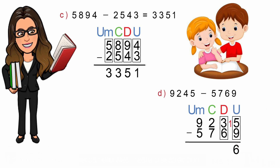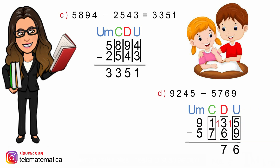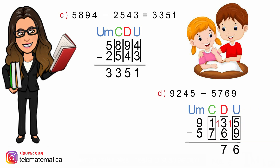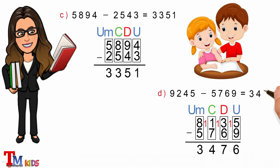Continuamos con la columna de las decenas, pero tampoco podemos restarle 6 al 3, entonces le pedimos una prestada a la centena y el 3 se transforma en 13. Luego restamos 13 menos 6 es igual a 7. Continuamos con la columna de las centenas, pero tampoco podemos restarle 7 al 1, entonces le pedimos una prestada a la unidad de mil: el 1 se transforma en 11 y el 9 se transforma en 8. Luego restamos 11 menos 7 es igual a 4. Por último, restamos la columna de las unidades de mil: 8 menos 5 es igual a 3. Este resultado lo escribimos en la operación: 9245 menos 5769.